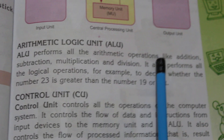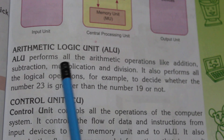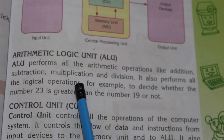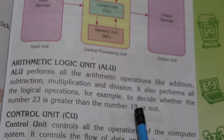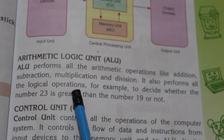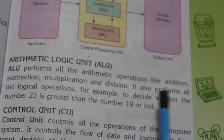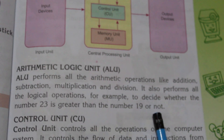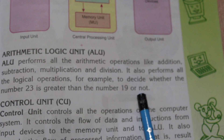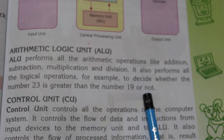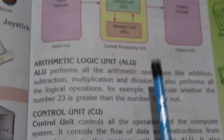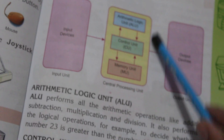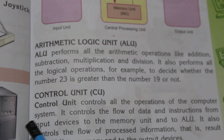The Arithmetic Logic Unit (ALU) performs all arithmetic operations like addition, subtraction, multiplication, and division. It also performs logical operations — for example, to decide whether the number 23 is greater than the number 19 or not. Just as we think to compare numbers, the computer does this through the CPU.